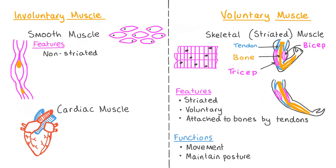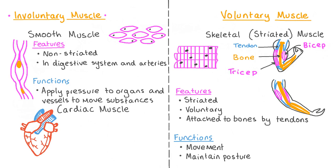If we were to look at the individual cells in smooth muscle we would see that they are non-striated, or not stripey. Smooth muscle is sometimes more generally known as involuntary muscle as it is not under conscious control. Smooth muscle is found in many different organs — for example in the walls of hollow organs like the esophagus, the stomach, and the intestines to help food move through the digestive system. There is also smooth muscle in artery walls, where its function is to apply pressure to push substances like blood or food through continuously without us having to think about it.